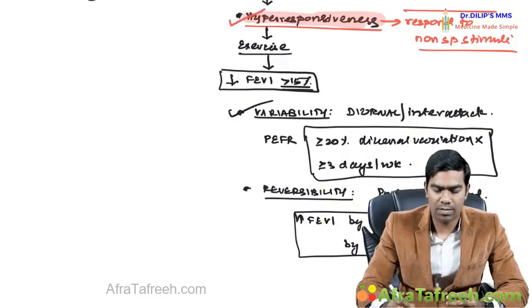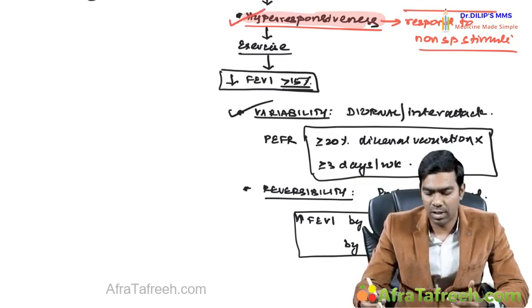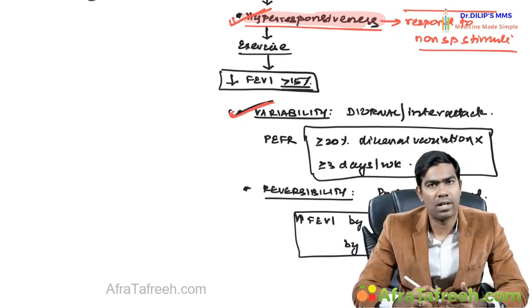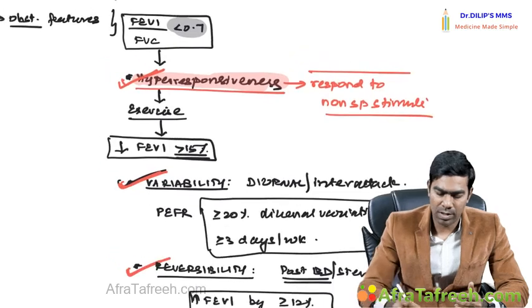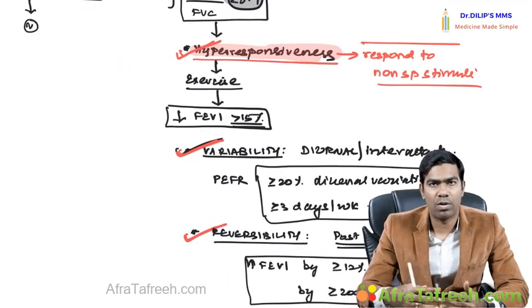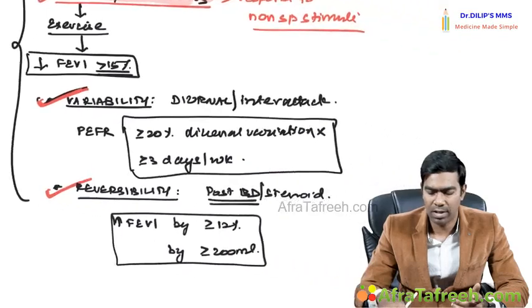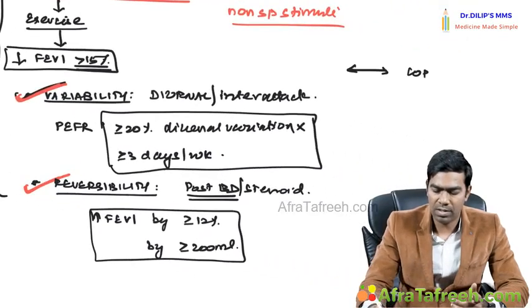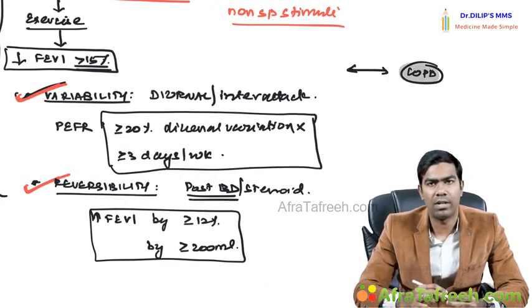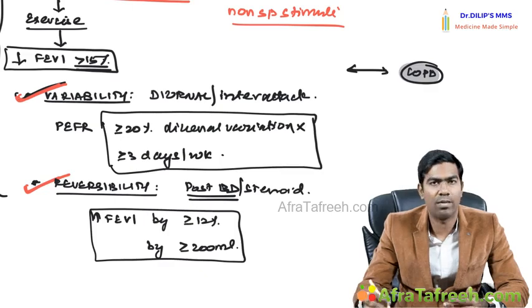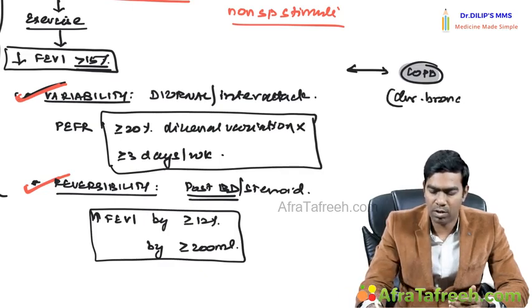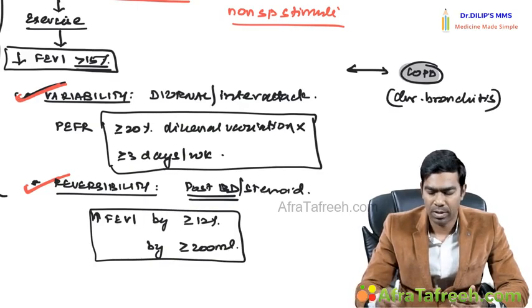So bronchial asthma is a syndrome or complex consisting of hyper-responsiveness of the airways, variability in responsiveness, and reversibility of obstruction — these three things form the cornerstone for diagnosis. However, one problem: all three features of hyper-responsiveness, reversibility, and variability can be seen in certain COPD patients also, especially those with chronic bronchitis, making differentiation very difficult.